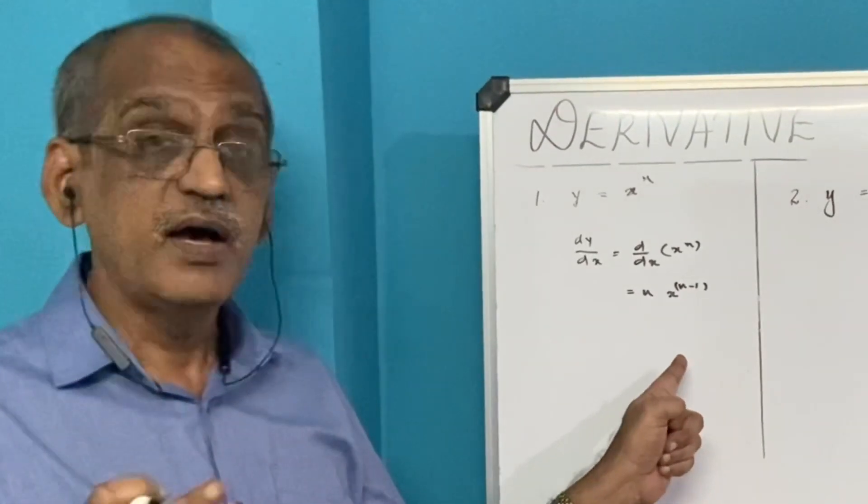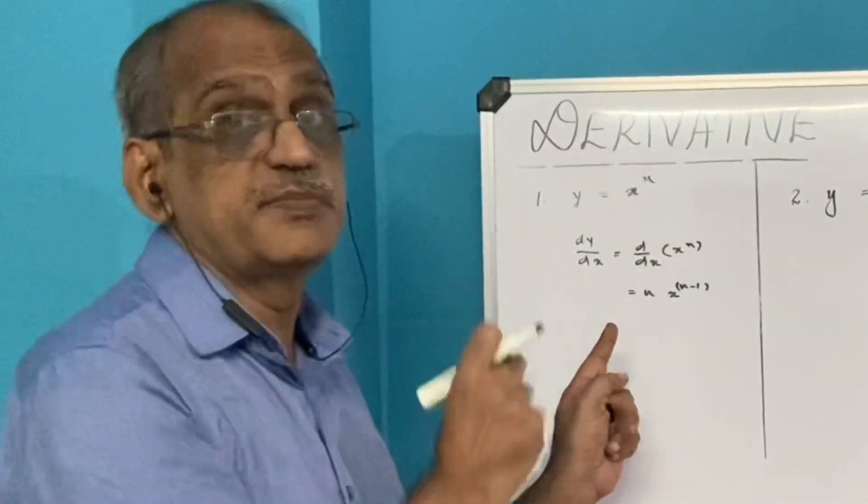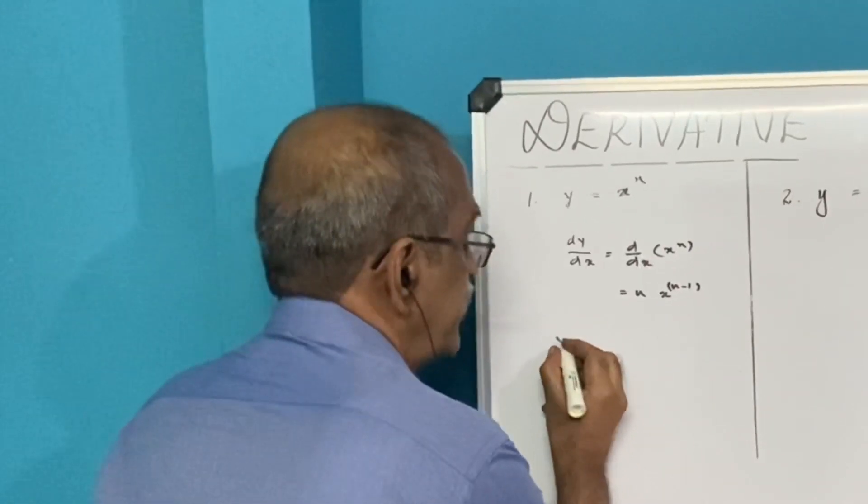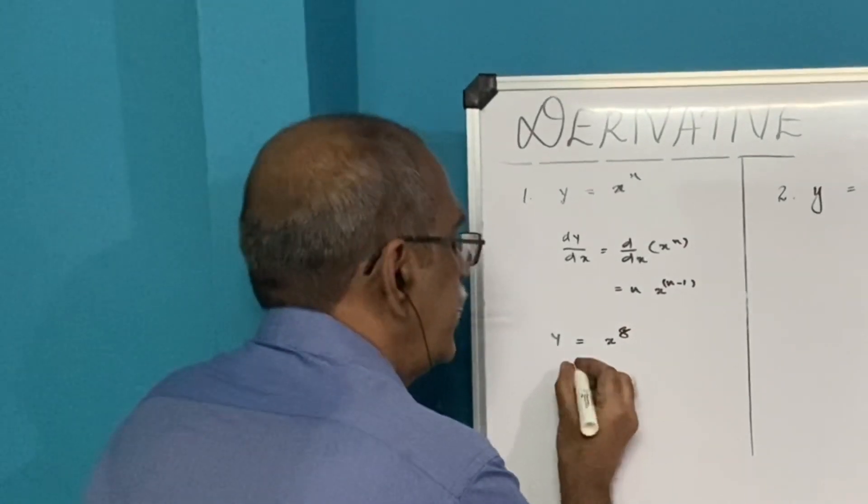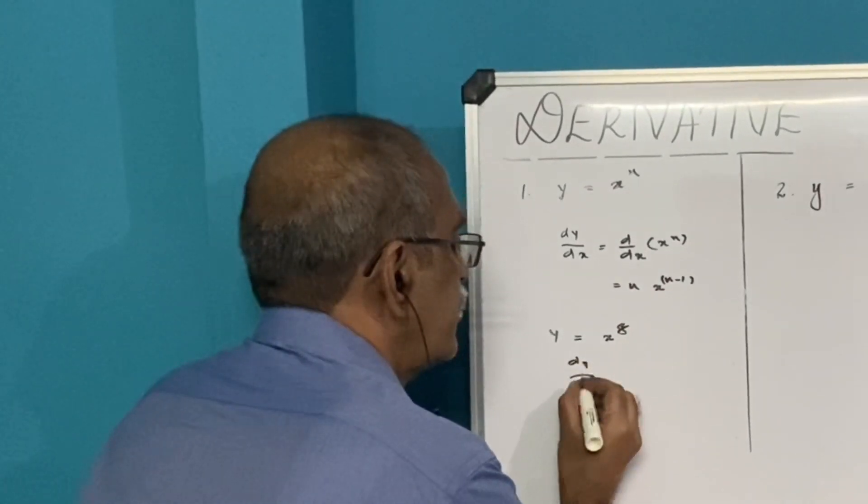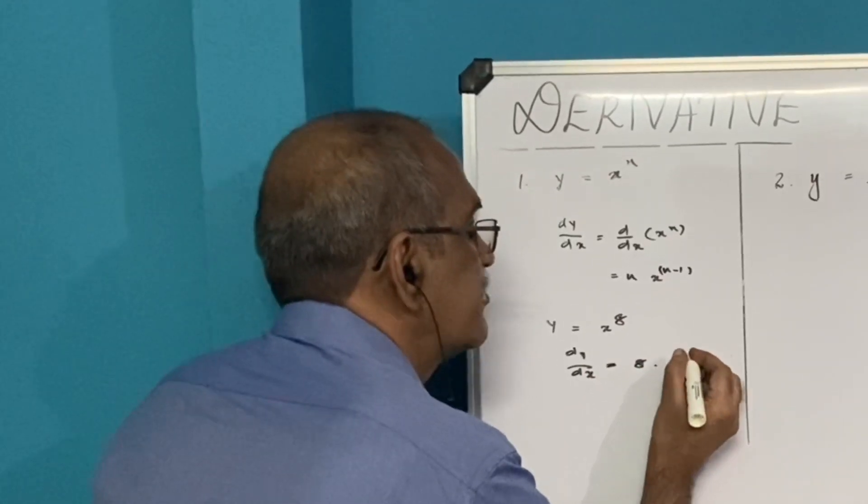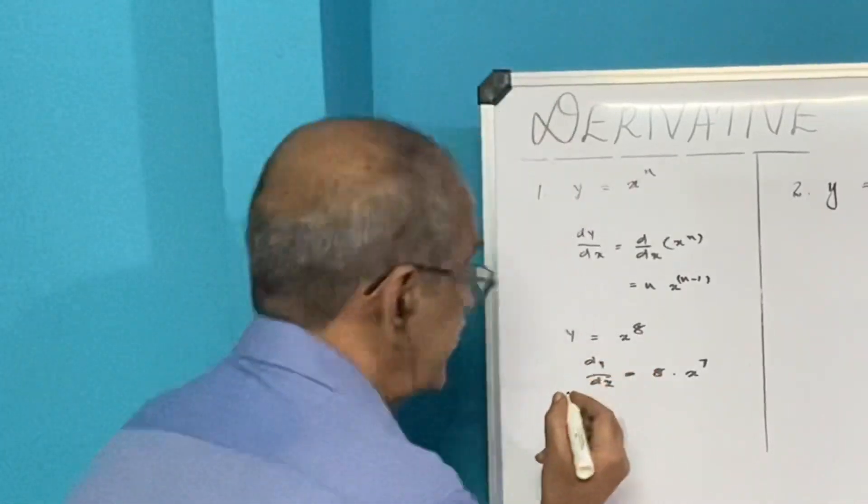Remember this formula which you had proved earlier using the first principle. Suppose y equals x raised to 8, then dy/dx is equal to 8 times x raised to 7.